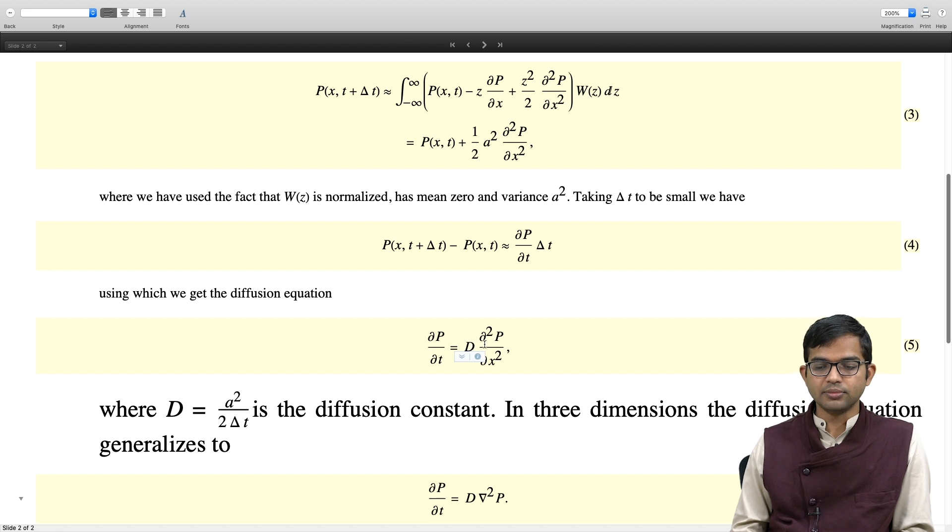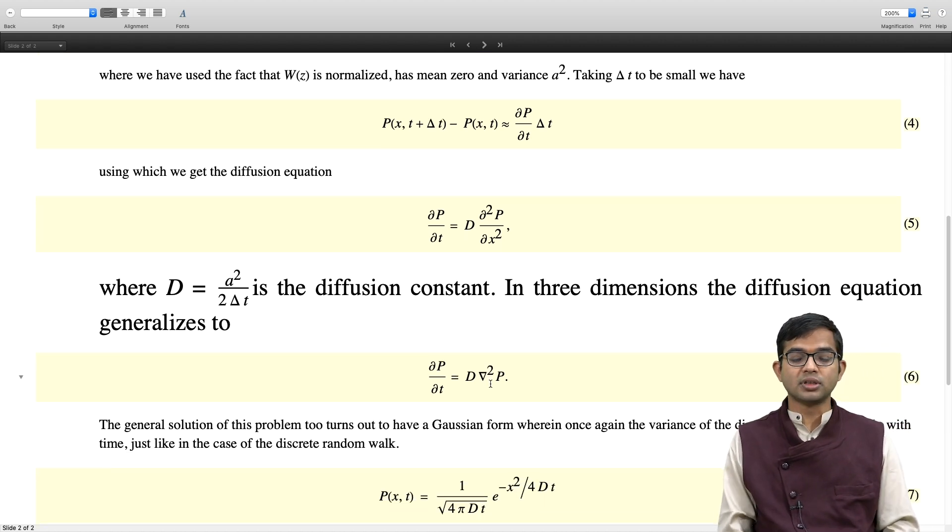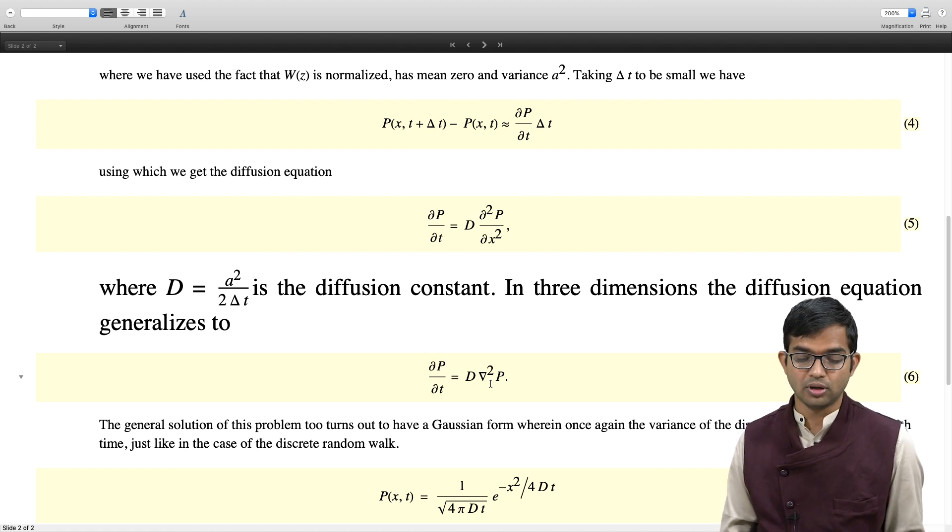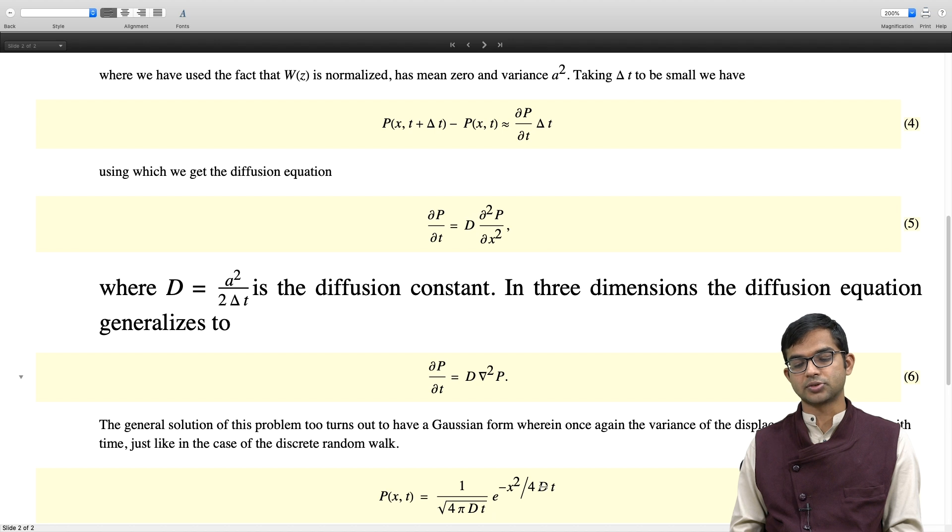So in 3 dimensions, this generalizes automatically. This is what is called the diffusion equation. It is a partial differential equation involving a second order derivative in space and just a first order derivative in time. dP/dt is equal to D times d²P/dx². And this capital D is connected to the variance of this distribution W. And in 3 dimensions, this generalizes automatically to this expression, dP/dt equal to D times del squared P. And there is another diffusion constant associated with this as well. And the general solution of this problem turns out to be a Gaussian distribution.